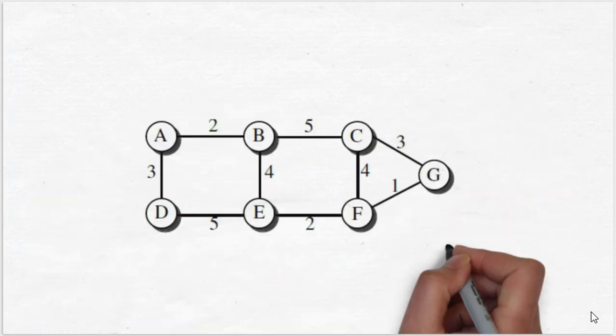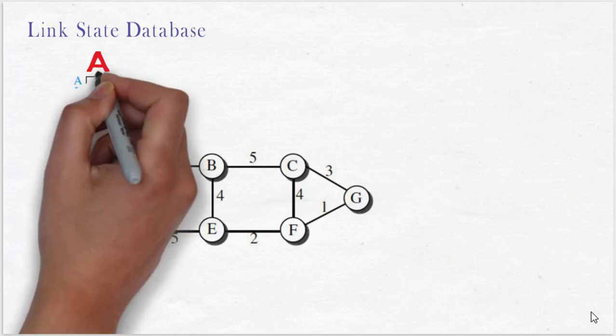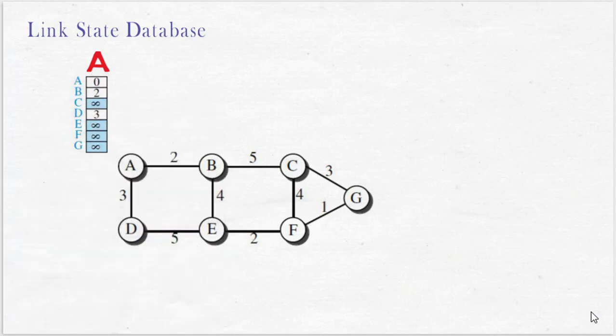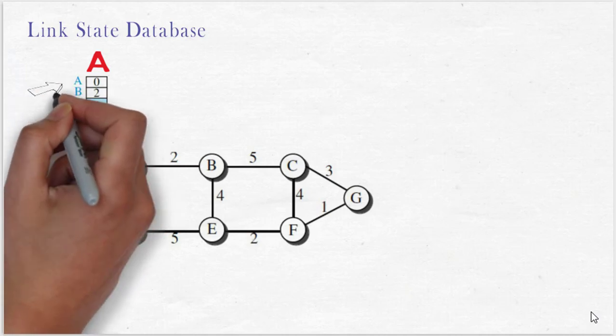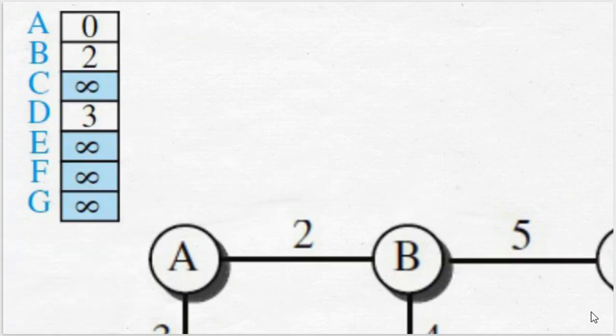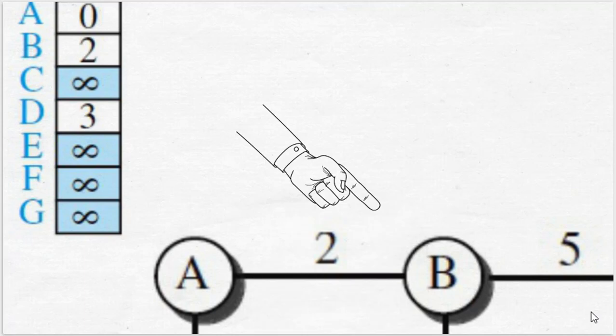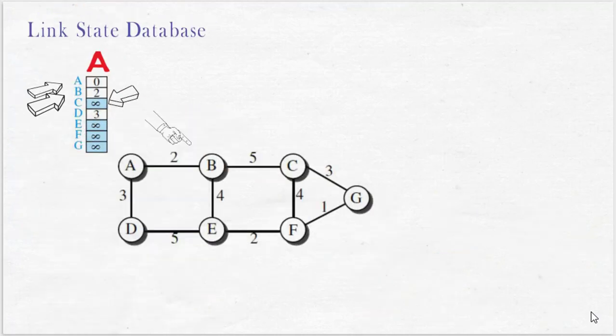In order to prepare a routing table for each node with respect to least cost paths, initially each node in a network system finds their path and cost to adjacent nodes. First, considering node A, the cost from node A to node A is 0. The metric from node A to node B is 2. Node C is not having a direct link from node A; there is an intermediate node B in between. Initially nodes are finding adjacent cost, so the cost value from node A to C is taken as infinity.